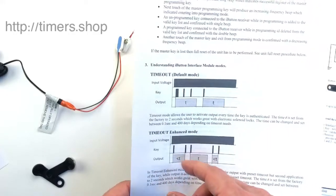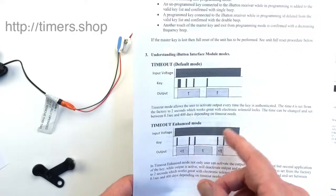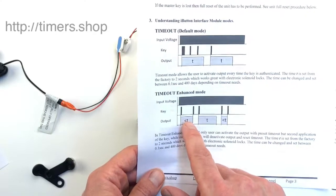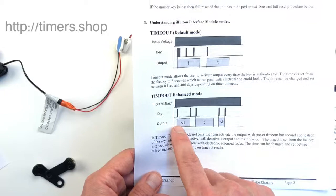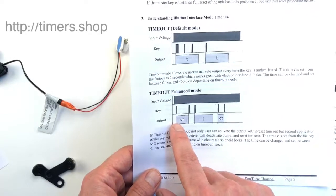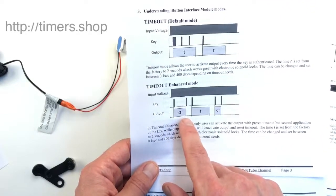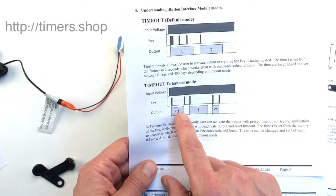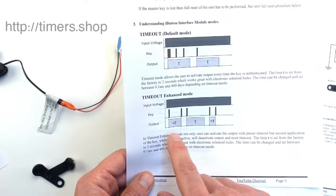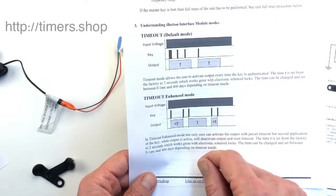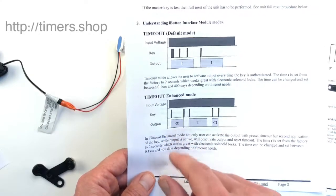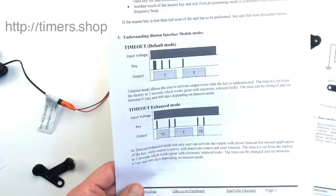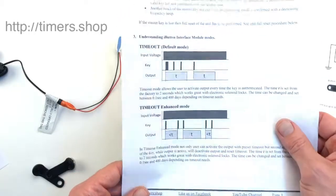The second mode is timeout enhanced mode. Here you can not only activate the output for a period of time, but also deactivate it by applying the same key. For example, if you set it for half an hour, the lock will stay active, but you can deactivate the output early with your key.